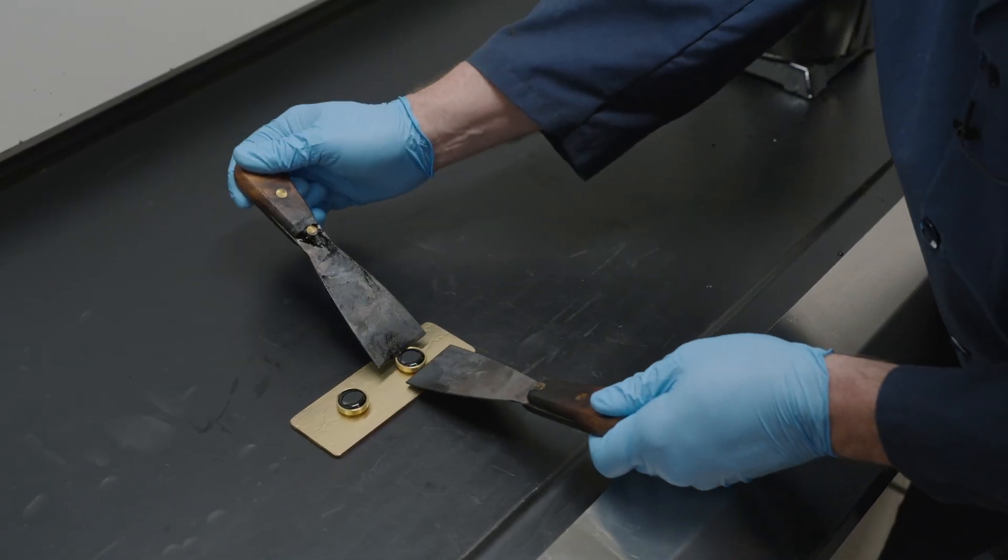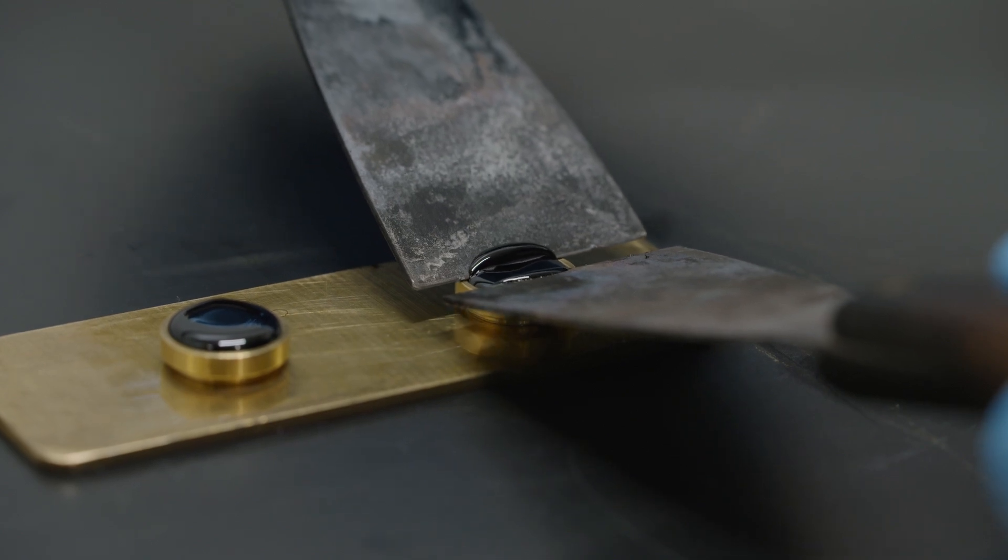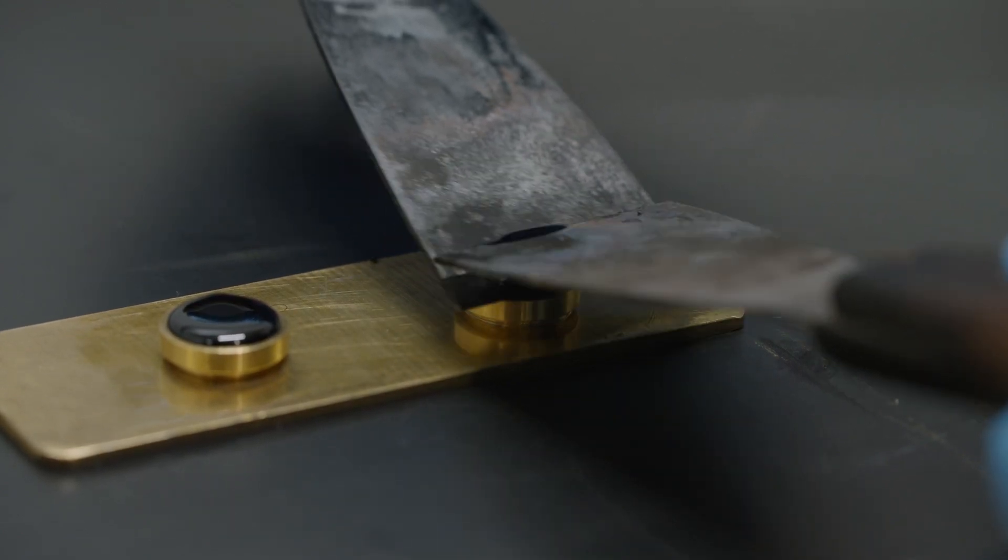After the sample has cooled to room temperature, trim the excess material level to the top of the ring with a hot knife or spatula.